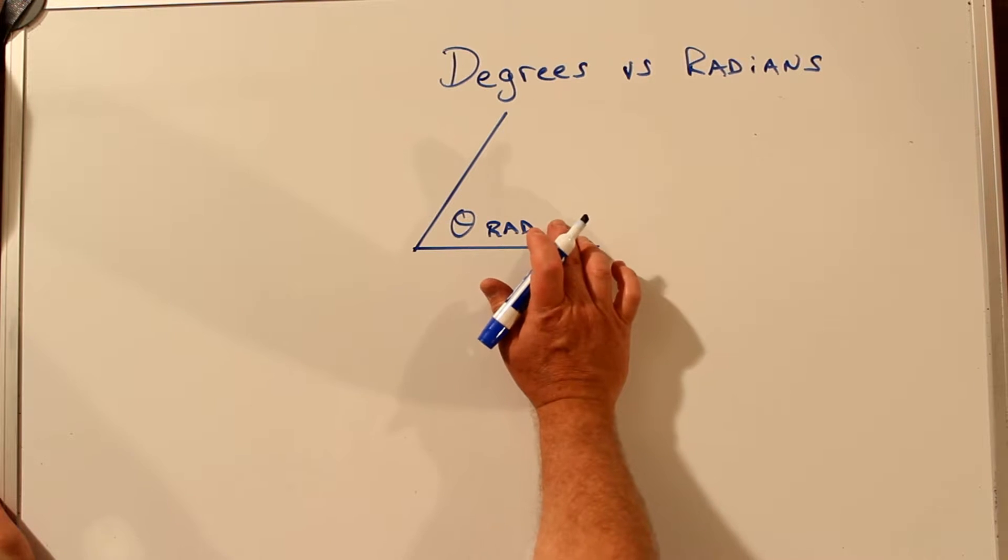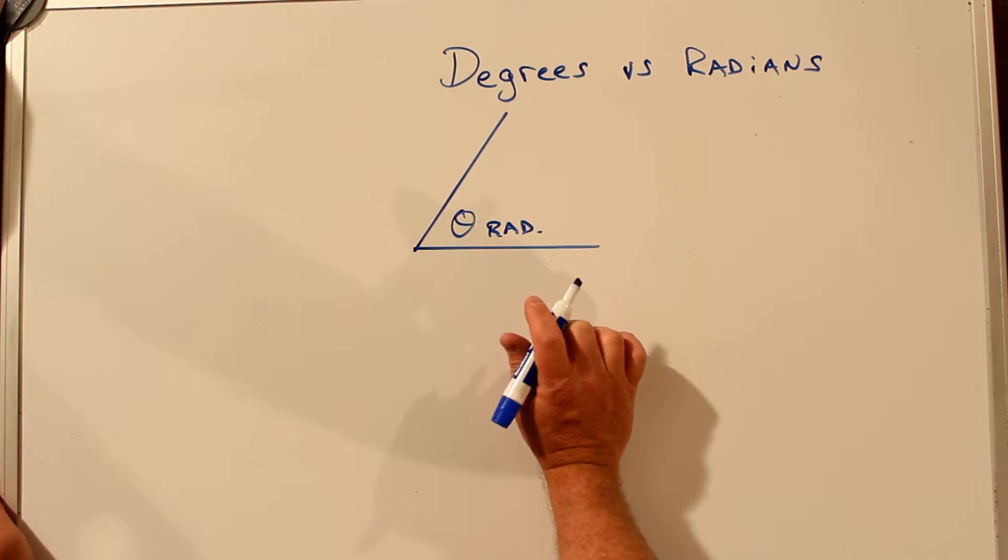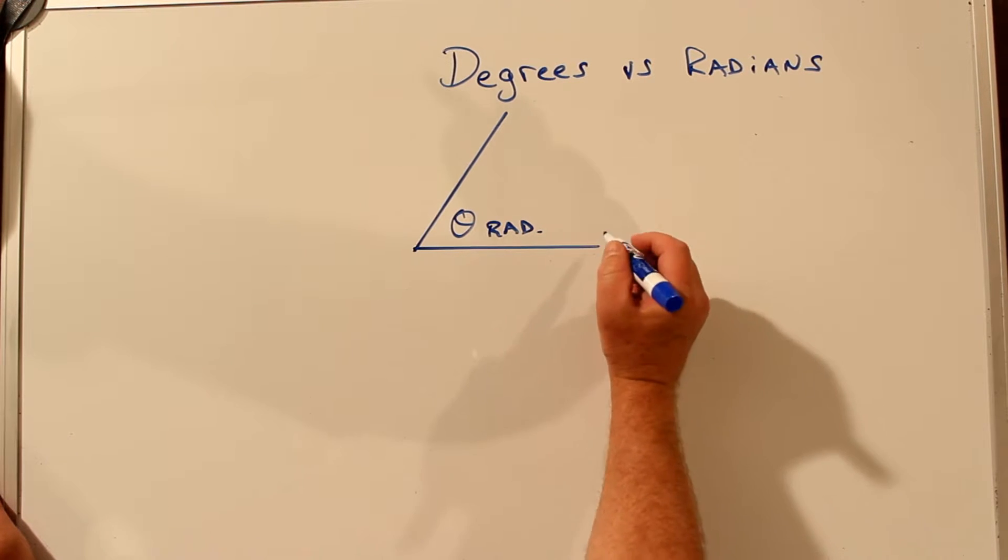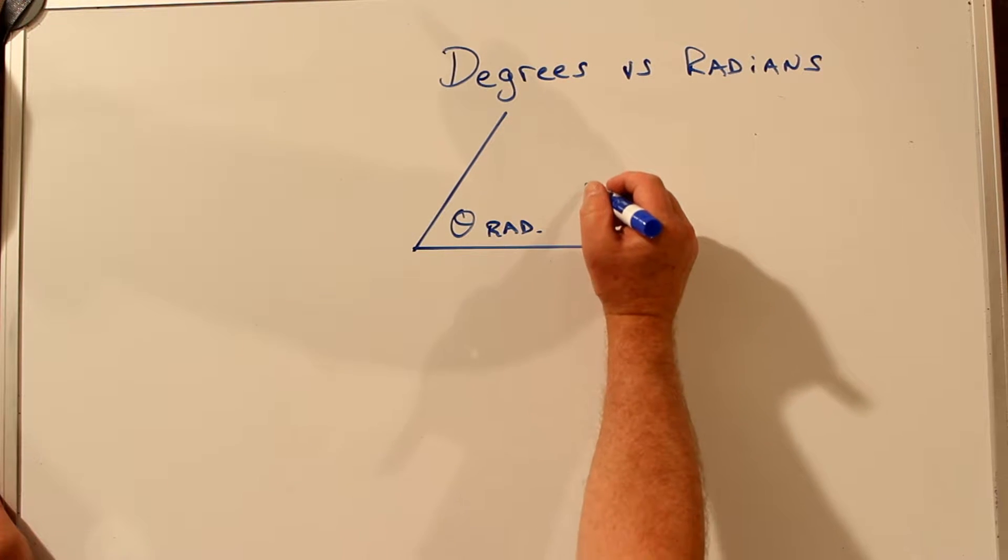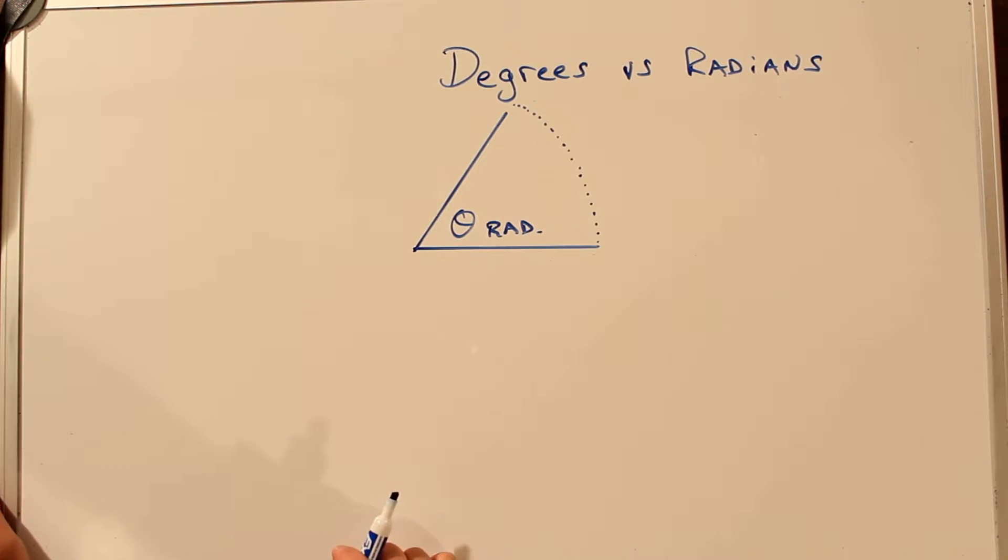Now let's look at radians. Theta is the letter used when talking about the angle in radians. And radians, just like degrees, is based on the amount of a circle that two lines cut out when you extend them all the way to a circumference of a circle.